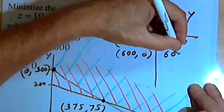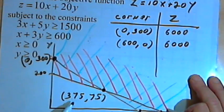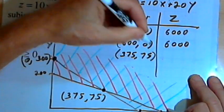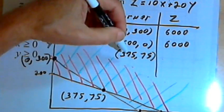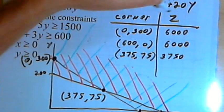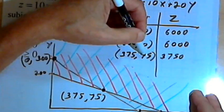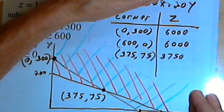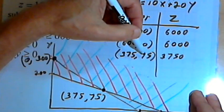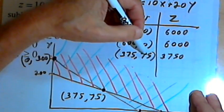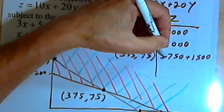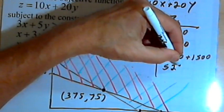Now we'll try that last point at 375,75. So x is 375. 10 times 375 is 3,750. y is 75, so I want 20 times 75. Let's multiply by 2 and then by 10. 75 times 2 is 150. And then 10 times 150 is 1,500. When I add those together, I'm going to get 5,250.